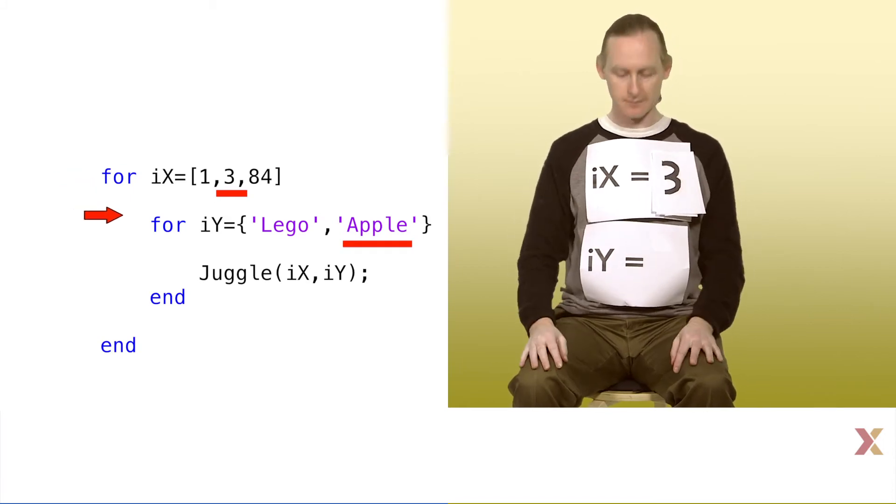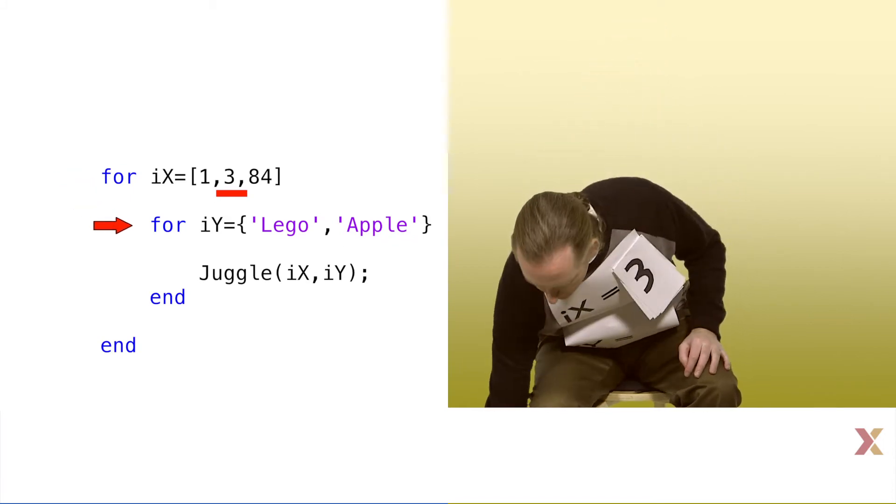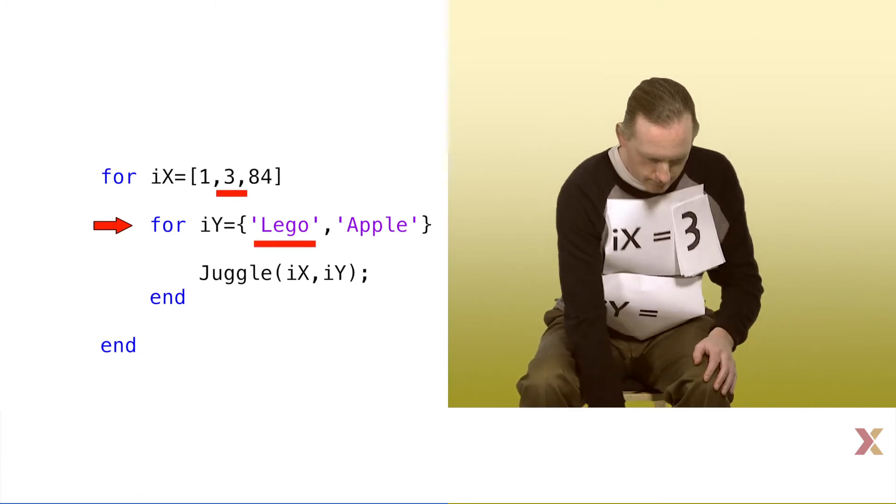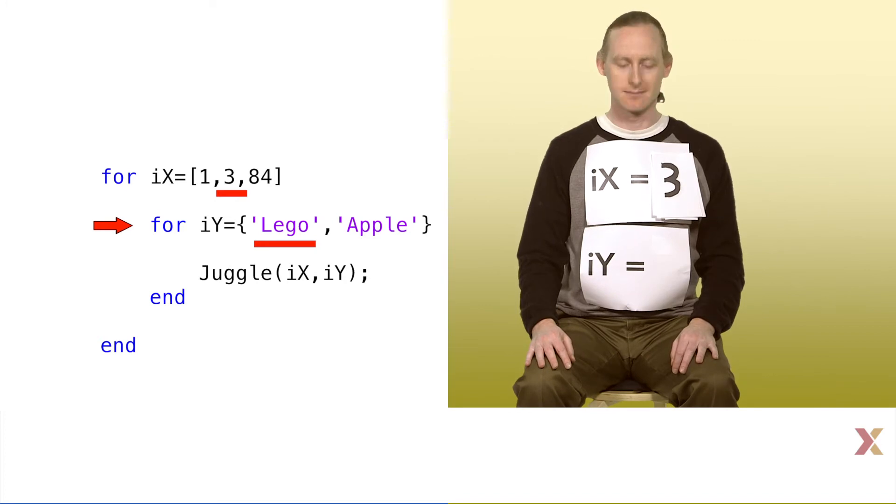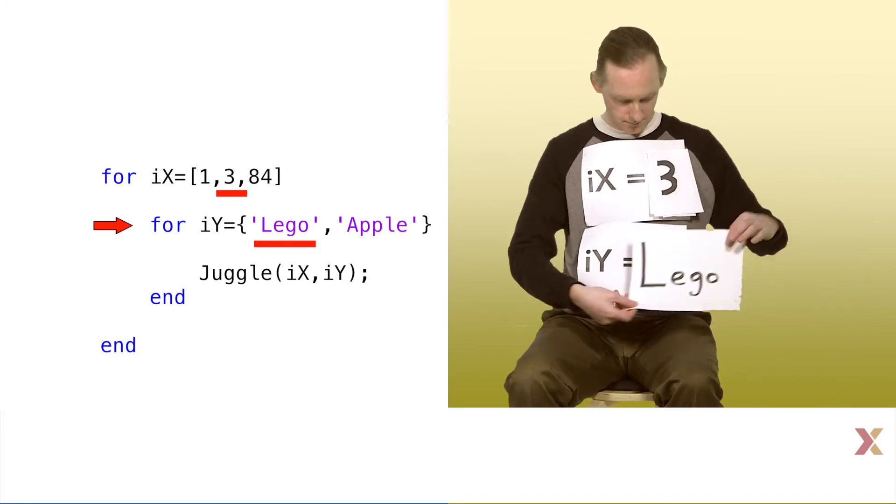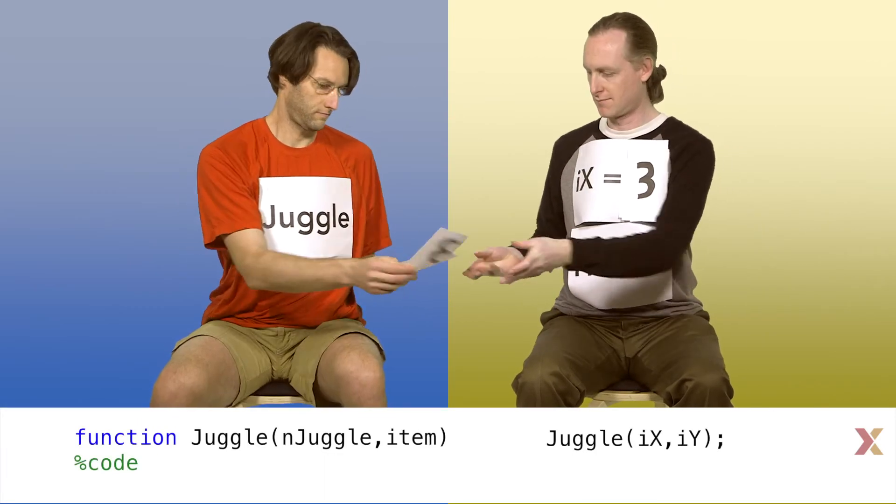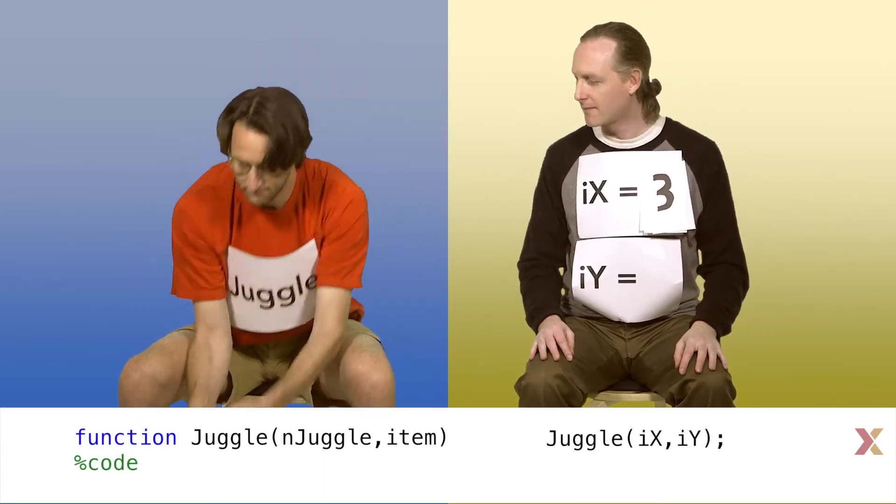The next line of code is a declaration for the inner for loop, which we will now run again. The fact that we ran this loop before has no influence on how the loop will run now. The first time we go through the loop, iy will still become a cell with the word lego. The loop passes its values to function, the function juggles three legos.